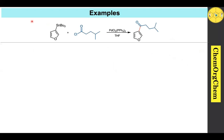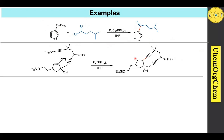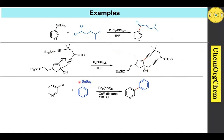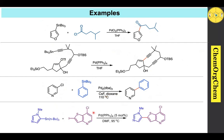Let's see some examples of the Stille cross-coupling reaction. In the first example, an organostannane reacts with an acyl chloride under palladium catalysis to produce the corresponding carbon-carbon coupling product. The next example is an intramolecular coupling, where the organostannane portion couples with the aryl triflate portion within the same molecule to produce the corresponding product. Another example shows a heterocyclic organoelectrophile reacting with an organostannane using fluoride as an additive. In another example, a heterocyclic organostannane reacts with a heterocyclic organoelectrophile under palladium catalysis to give the carbon-carbon coupling product.